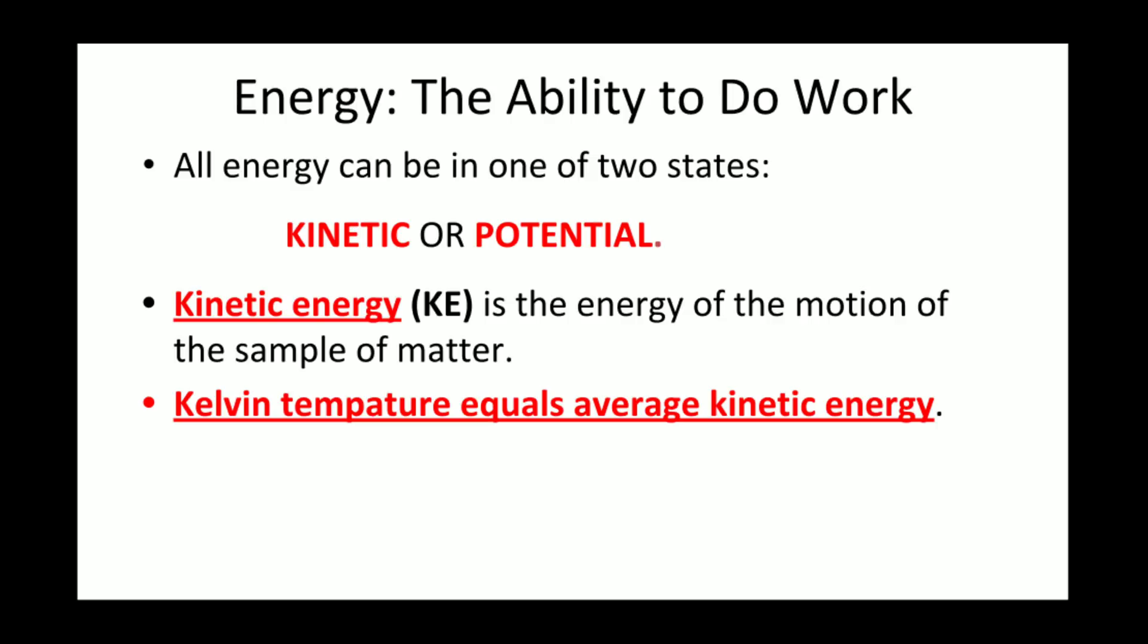Chemistry is the study of matter and its changes. Energy is what changes matter. There are two types of energy when dealing with matter: kinetic energy and potential energy. Recall from the previous unit that kinetic energy, the energy of motion, is related to temperature. The average kinetic energy exactly equals the Kelvin temperature. When Kelvin temperature is zero, there is no molecular motion. When kinetic energy is changing, so is the temperature.